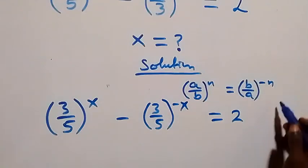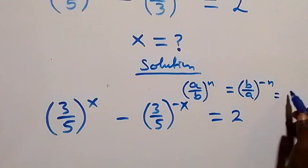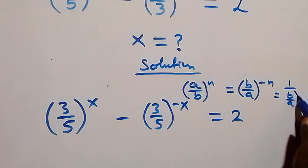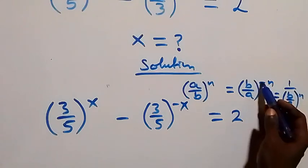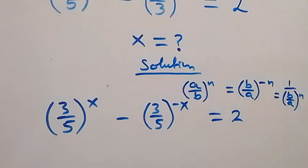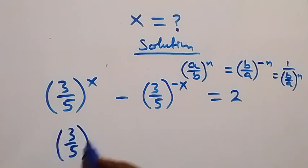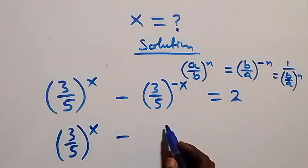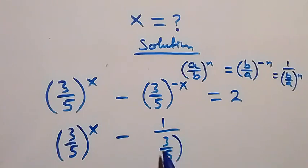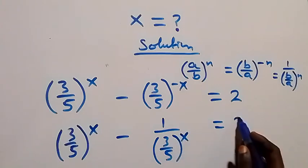Also from here we can equally write this using the rule that a negative power serves as 1 over the base. This implies we can write this as (3/5) raised to power x, minus 1 over (3/5) raised to power x, then equals to 2.